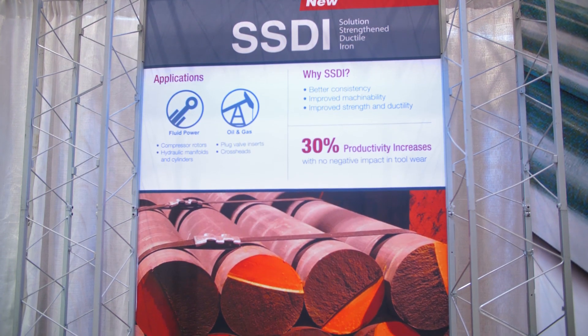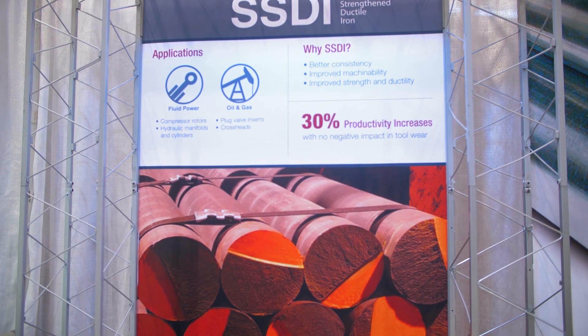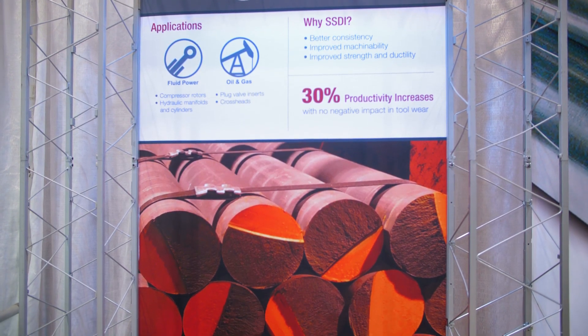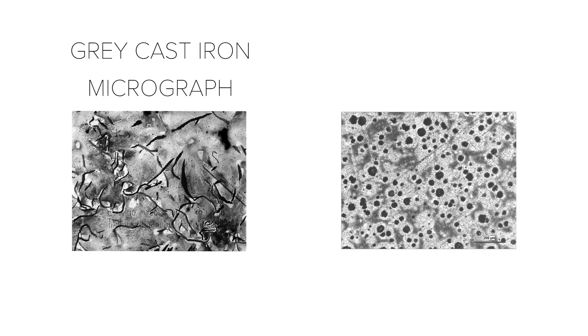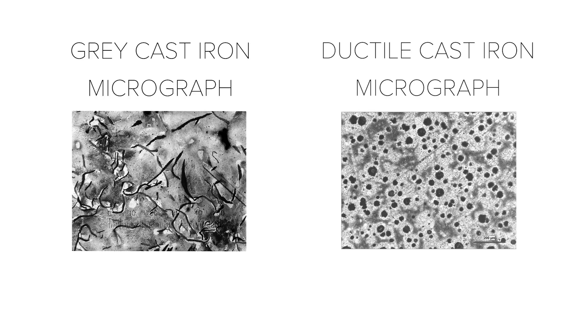The major difference between gray and ductile iron is in the graphite structure in the material itself. The gray iron has a flake graphite structure as opposed to the nodular small round balls that you see in the ductile grade.